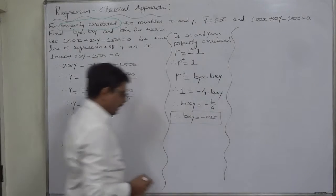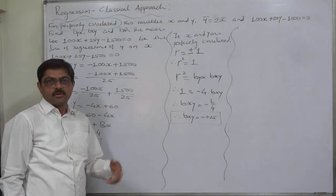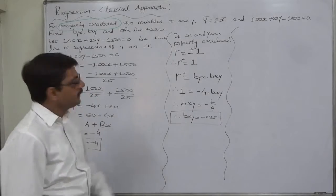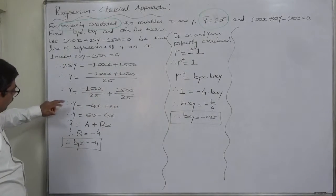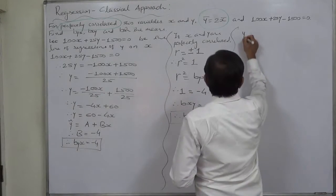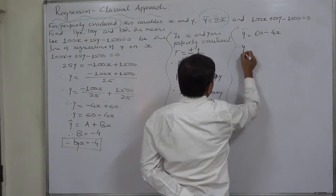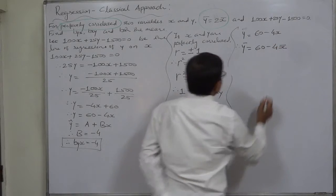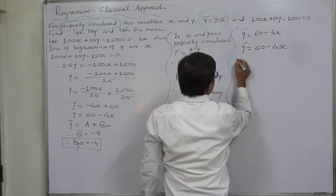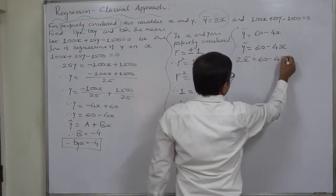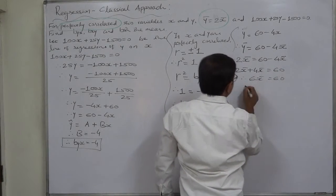Now, how can we find the two means? Generally we would solve two regression equations simultaneously, but here we have only one equation. However, we have the relationship y̅ equals 2x̅. We also have y equals 60 minus 4x from the regression equation. Substituting x̅ into this formula gives y̅ equals 60 minus 4x̅. Now substituting y̅ equals 2x̅: 2x̅ equals 60 minus 4x̅, so 6x̅ equals 60, therefore x̅ equals 10.